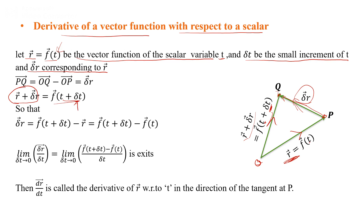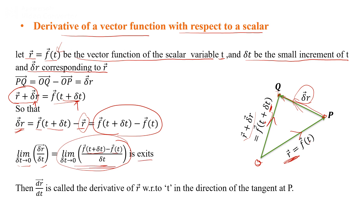The change δr can be written as δr = f(t + δt) − f(t). If we divide by δt and take the limit as δt tends to 0, we get the limit of [f(t + δt) − f(t)] / δt. If this limit exists, then dr/dt is the derivative of r with respect to t, representing the tangent direction at point P.